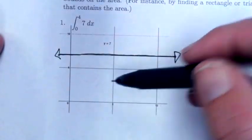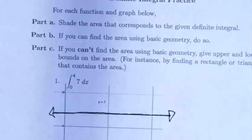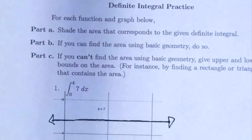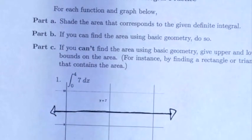We have this definite integral and curve. We're going to do three things: shade the area that corresponds to the given definite integral, find the area using basic geometry if we can, and if we can't, give estimates - say the area is at least this much or at most this much.